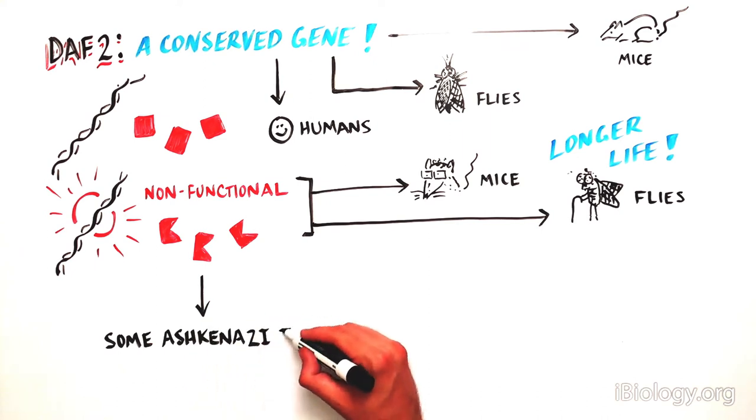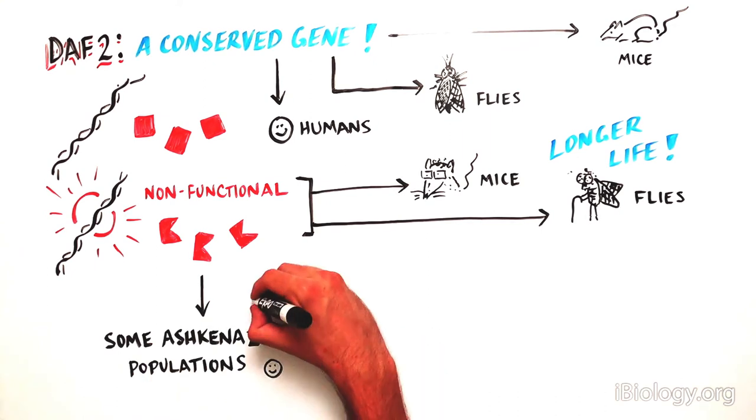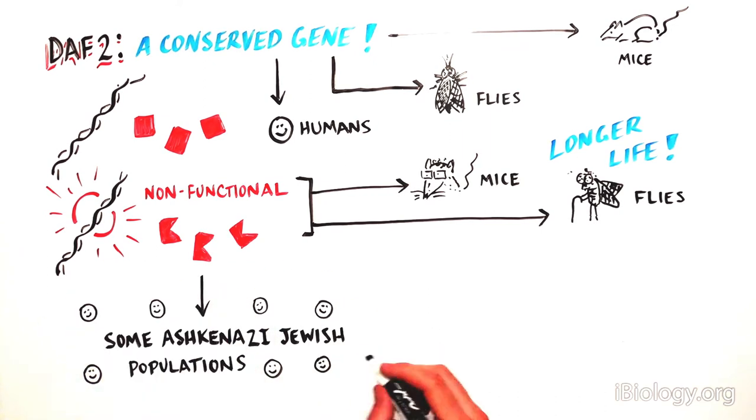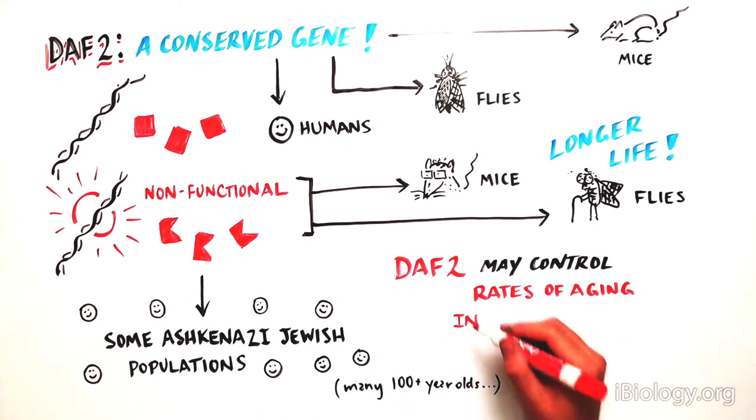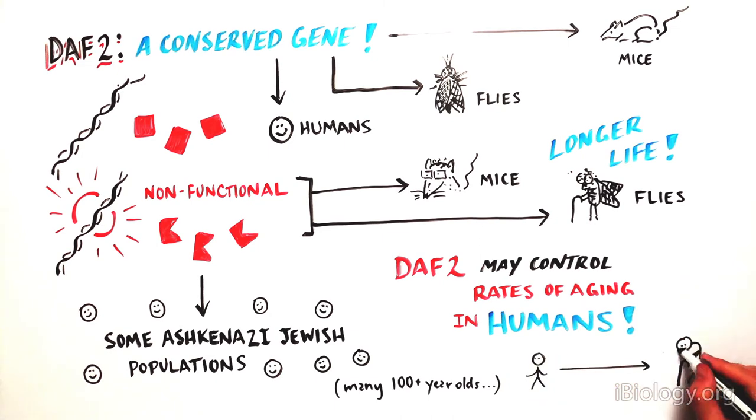In humans, certain populations of Ashkenazi Jews that have many centenarians also have less functional DAF2. This would suggest that DAF2 can also control rates of aging in our species as well.